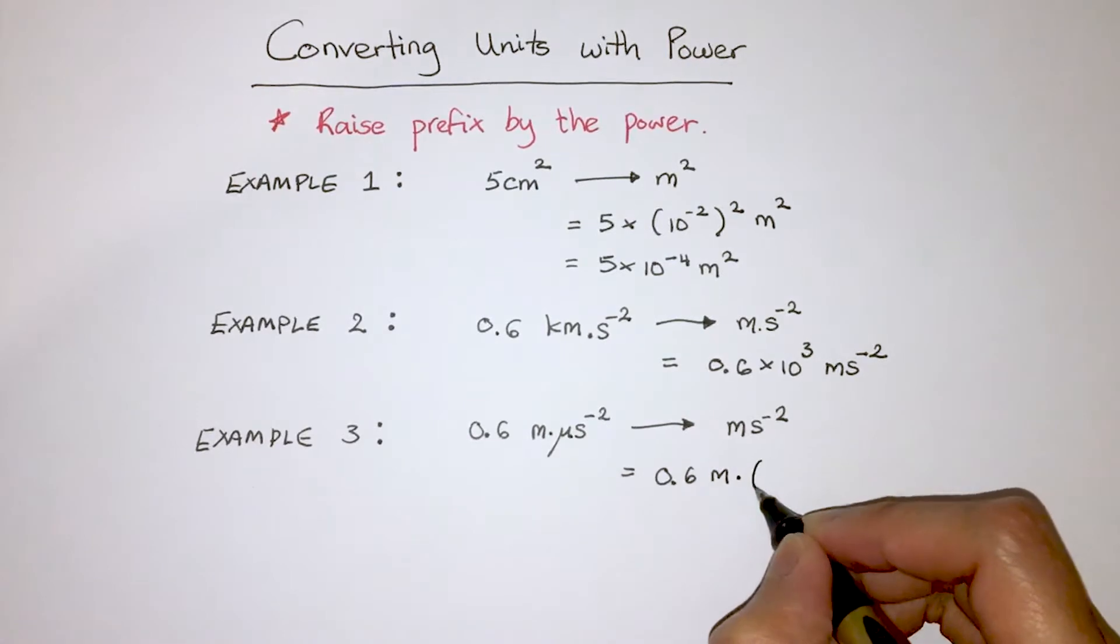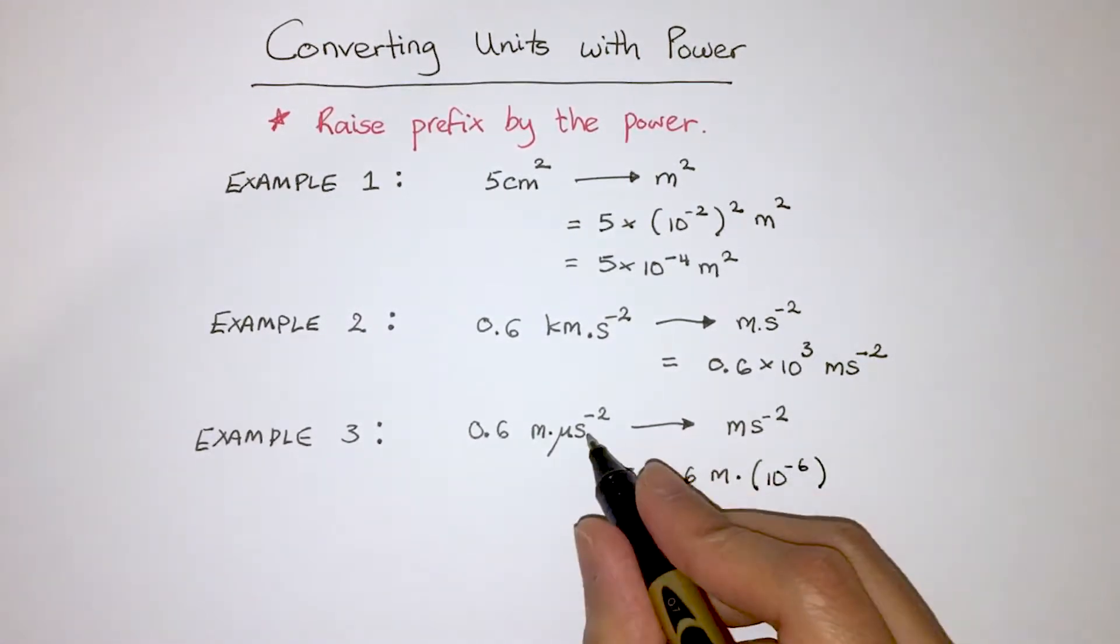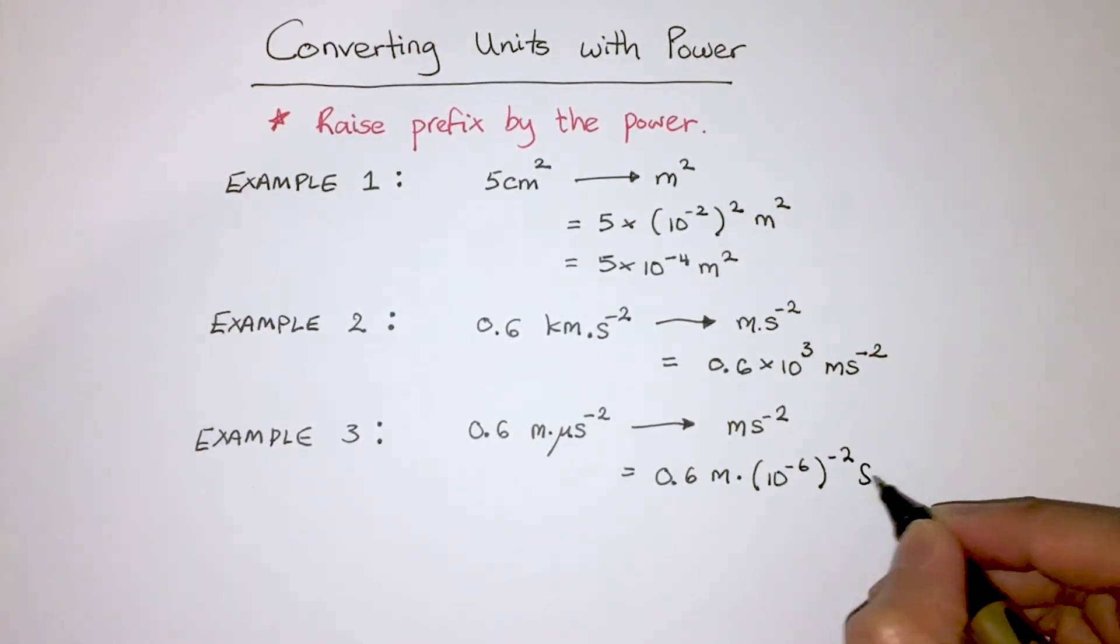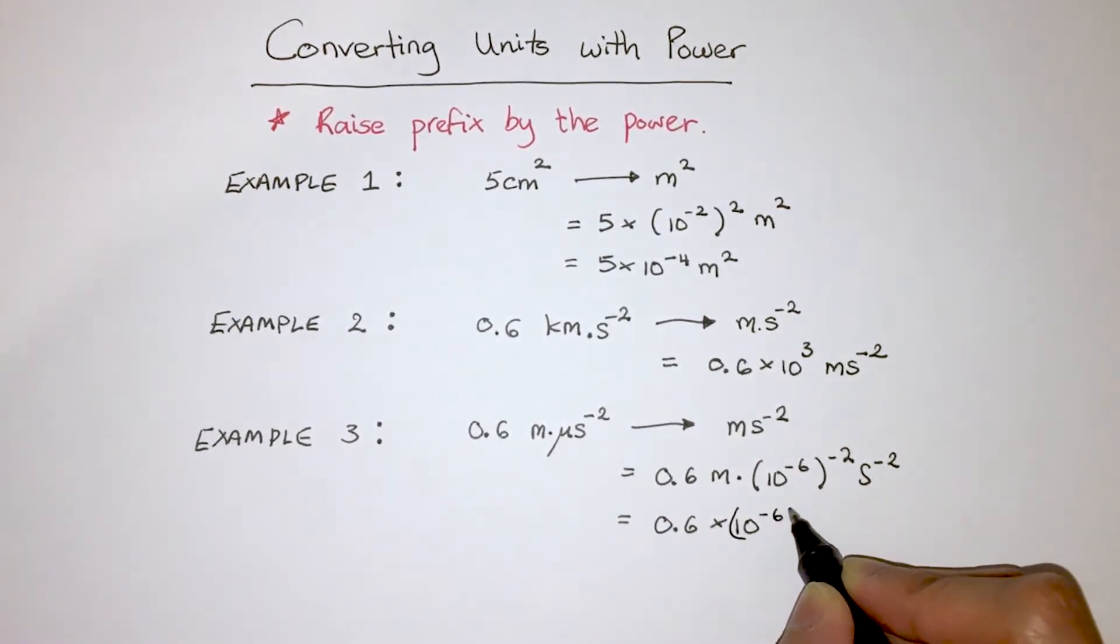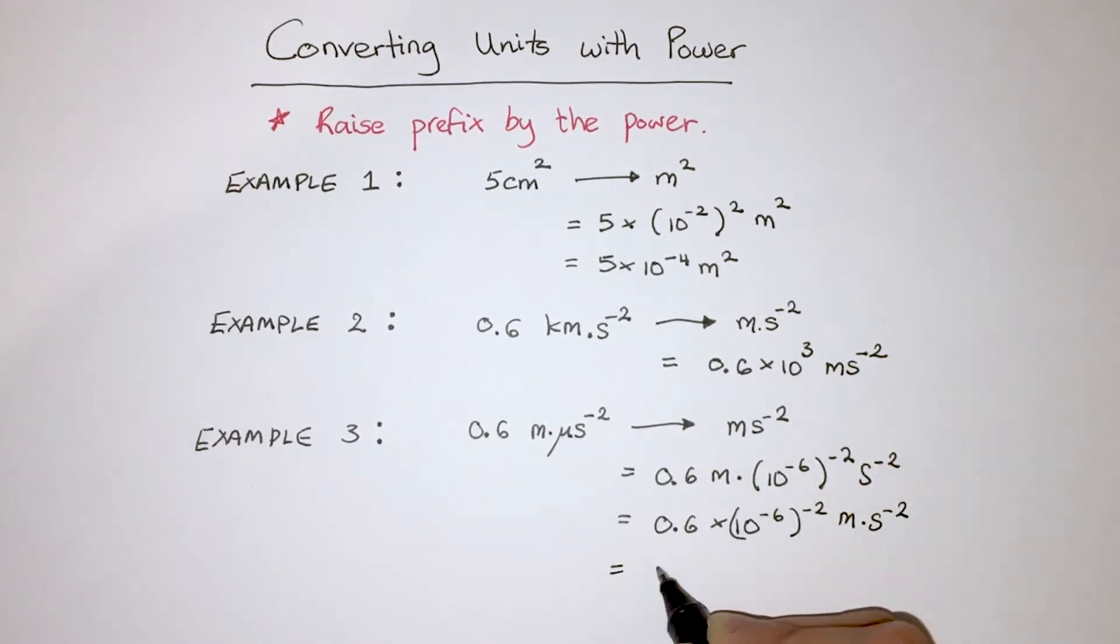So we do 0.6 times 10 to the minus 6, bracket to the power of minus 2. Since we have the power of minus 6 and the power of minus 2, these multiply together to give us a new power of 12.